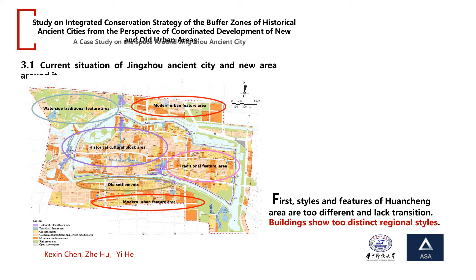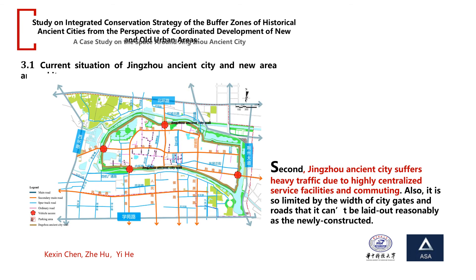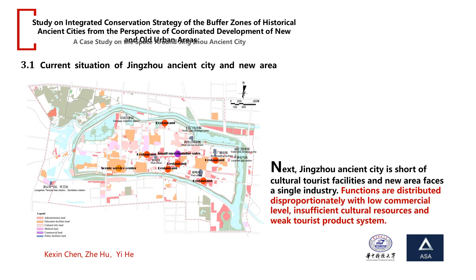Regarding the current situation of Jingzhou ancient city and the new area around it: first, the styles and features of the Huancheng area are too distinct and lack transition — buildings show two sharply different regional styles. Second, Jingzhou ancient city serves heavy traffic pressure, with highly centralized service facilities and commuting, and is constrained by the narrow city gates and roads. Additionally, functions are distributed disproportionately, with a low commercial level, insufficient cultural resources, and a weak tourist product system.